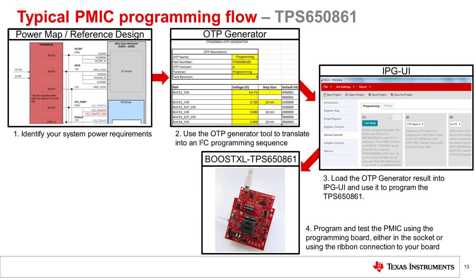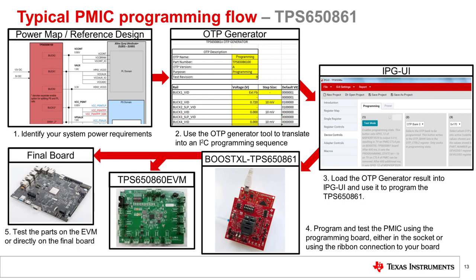Fourth and finally, you can either solder down the TPS-650861 sample on the TPS-650860 EVM board, available on TI.com, or the samples that have been programmed can be soldered down directly on a prototype board of the final embedded processor system.